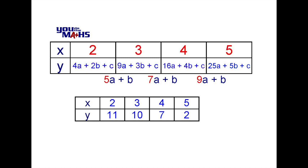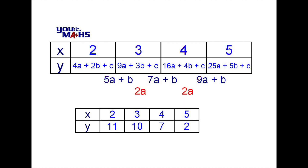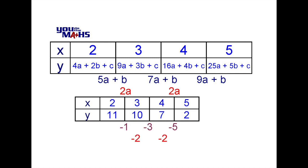It's interesting to look at the coefficients of the a values in each of those first differences. The 5 in 5a plus b matches the sum of the x values 2 and 3. Likewise, the next first difference 7a plus b has coefficient 7, which is the sum of 3 and 4, and 9 is the sum of x values 4 and 5. Following on from those first differences, the second difference in each case will be 2a. Now we match the algebraic values from the top table to the numerical values below: 4a plus 2b plus c matches 11, the first difference 5a plus b matches negative 1, and 2a matches negative 2.